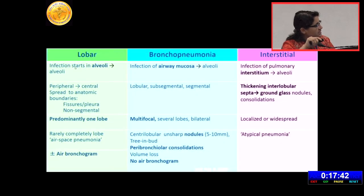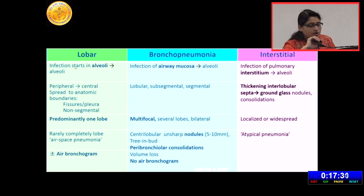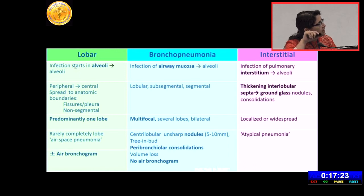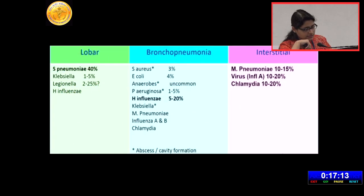In lobar pneumonia, infection starts in the alveoli, so peripheral-to-central spread predominantly involves one lobe. Air bronchogram may or may not be present. In bronchopneumonia, it starts from airway mucosa. In interstitial pneumonia, the interstitium is involved first, then the alveoli, so you will have thickening of the interlobular septa, some ground-glass nodules, and this is mostly seen in atypical pneumonia cases.